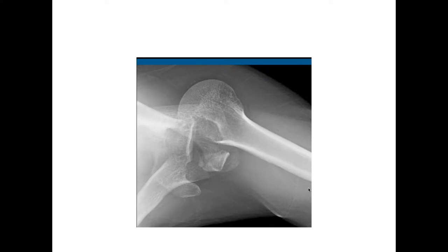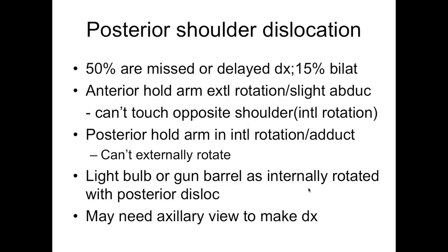This axillary view may be the only thing showing you have a posterior dislocation, so you've really got to try to get it. Sometimes it's hard because the patient won't tolerate it, and there are certain other tricks you can do. Half of these posterior dislocations are missed because people aren't thinking about it and aren't getting an axillary view. And 15% of them are bilateral. They're the three E's: electricity, epilepsy... I forgot the other one, but it's an E. Especially if it's bilateral, everything's going to be symmetrical, but if they can't move their shoulders, you know something's going on.